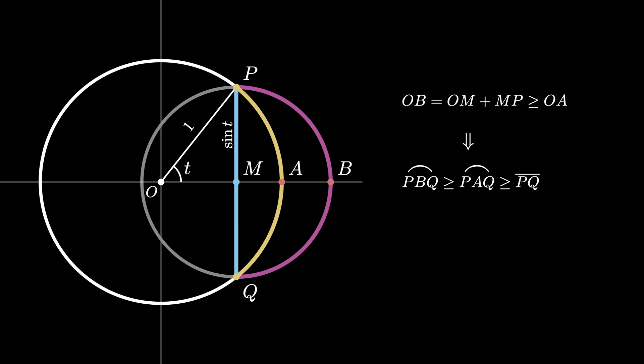By construction, the arc PBQ is the semicircle of a circle with radius sine T, and therefore has a length of pi times sine T. The arc PAQ is two copies of the arc PA subtending the angle T, and therefore the arc PAQ has a length of 2T.